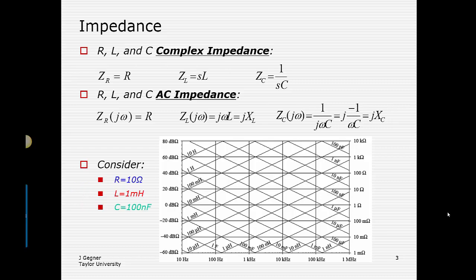The impedance of a 10-ohm resistor is simply a straight line with a slope of zero — it is independent of frequency. The horizontal axis is designated in hertz, related to omega by multiplying by 2 pi. The 10-ohm resistor is just a straight line. For a 1 millihenry inductor, we find the upward-sloping line of 1 millihenry. Why does it go up? Because the reactance of the inductor is omega L, or 2 pi f L — as frequency increases, the reactance goes up and therefore the impedance goes up.